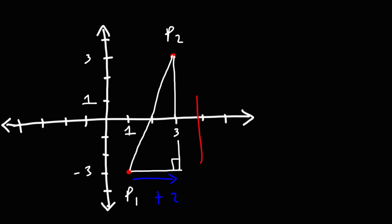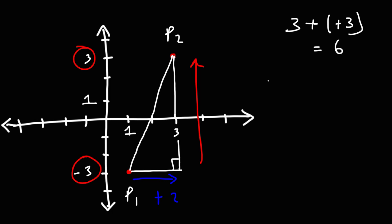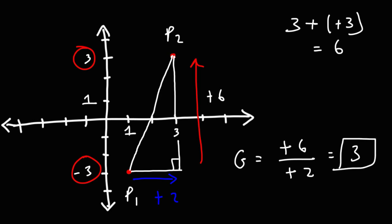The rise goes from negative 3 to 3. If we subtract the top number minus the bottom number, this becomes 3 plus 3, so that's a rise of 6. To calculate the gradient, it's the rise divided by the run: 6 over 2, which gives us a value of 3. That's the slope or gradient of the line between P1 and P2.